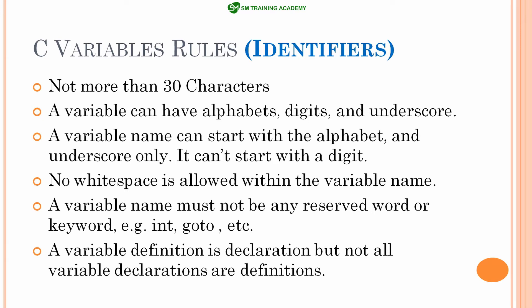The second rule is that a variable can have alphabets, digits, and underscores. You can use numbers in between the variable name and you can also use the underscore symbol.